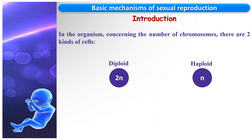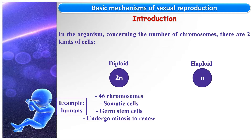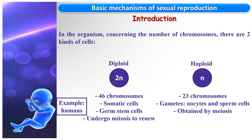First of all, concerning the number of chromosomes in an organism, there are two kinds of cells: diploid cells having 2n chromosomes, and haploid ones having n chromosomes. In humans, diploid cells contain 2n = 46 chromosomes — this is the case of somatic cells like neurons and white blood cells, and germ stem cells that are the mother cells of gametes. All these cells undergo mitosis to renew. On the other hand, haploid cells contain n = 23 chromosomes; this is the case of gametes — the female oocytes and male sperm cells — and these gametes are obtained by meiosis undergone by germ stem cells.